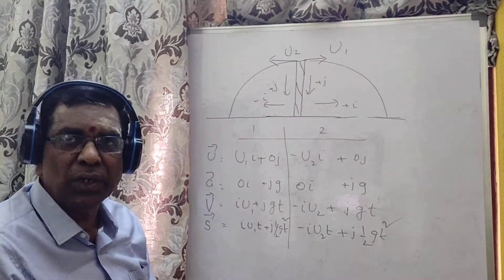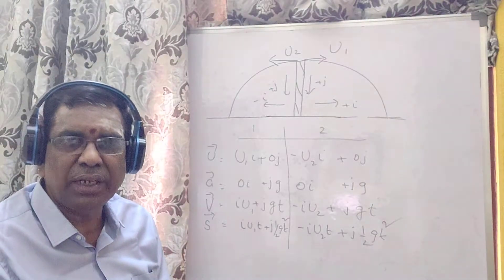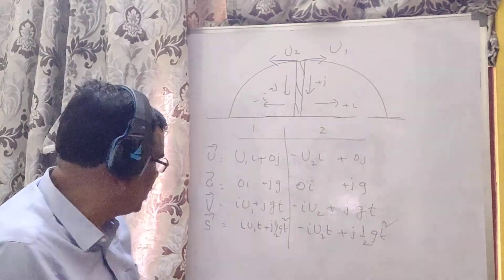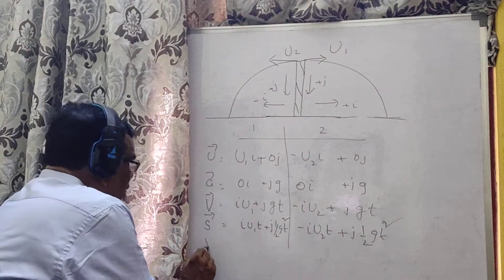This is minus iu2t plus jgt square. I am sure you have now developed the technique of writing down these equations.